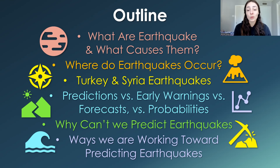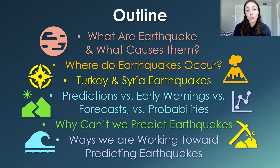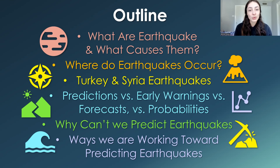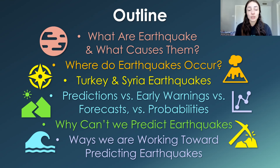In this video I'm going to talk about what earthquakes are, what causes them, where earthquakes occur, a little bit about the Turkey and Syria earthquakes and why they were so severe, whether we can predict earthquakes and the difference between predictions, early warnings, forecasts, and probabilities, and why we can't predict earthquakes. Spoiler alert: we cannot predict earthquakes. And lastly I'll talk about ways that we are trying to predict earthquakes in the future, or at least make it possible to some extent, whereas right now we really can't predict earthquakes at all.